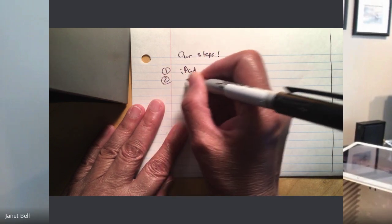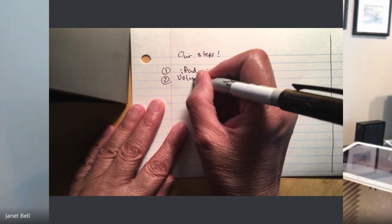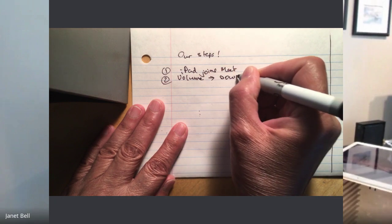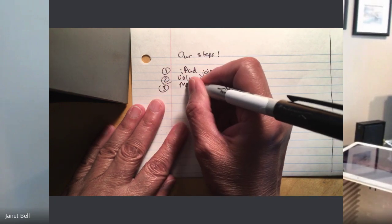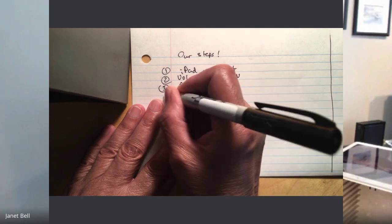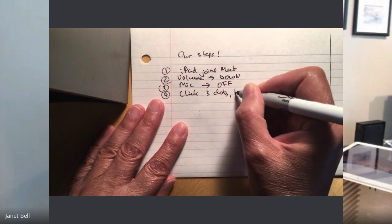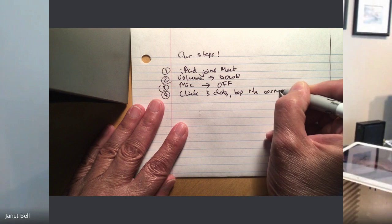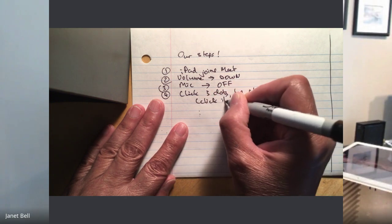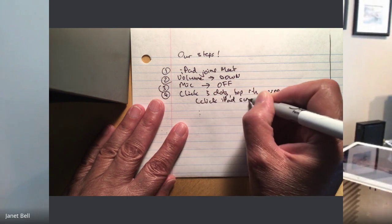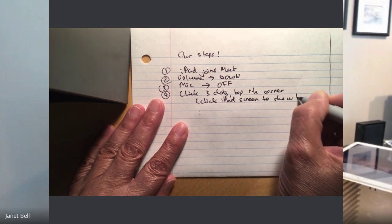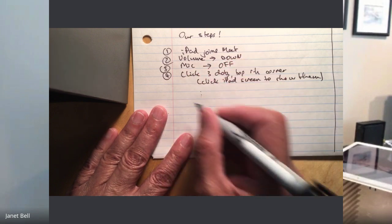Make sure that your volume is down and your mic is off. You're going to click the three dots in the top right hand corner — and if you don't see those three dots you're just going to make sure that you click on your iPad screen in order to bring those up. Then you're going to switch your camera to rear-facing. And because your iPad is in your Meet, everything that you're putting under your iPad is going to display up to your Meet. That's it, we're done.